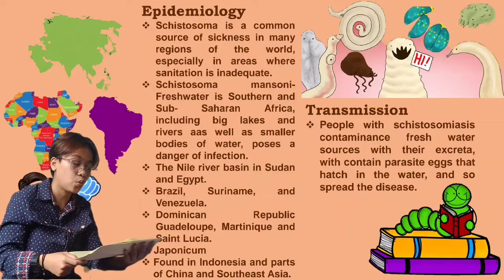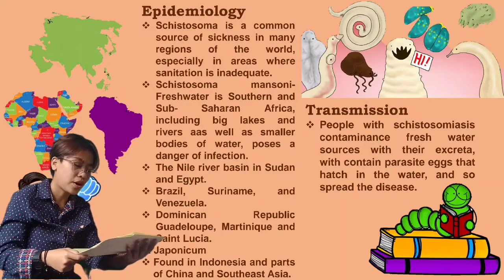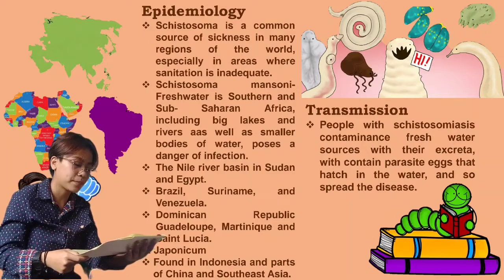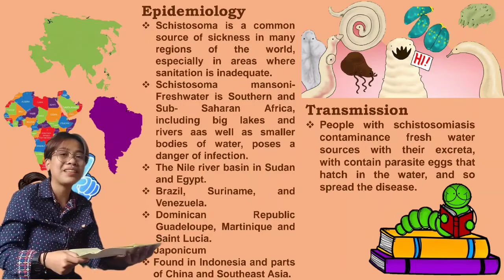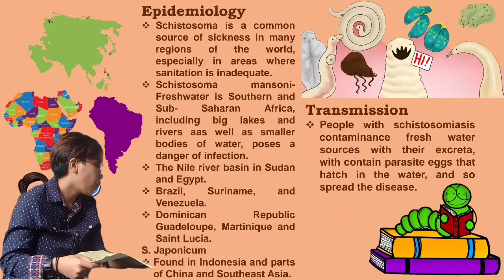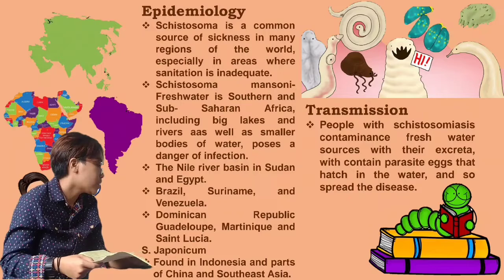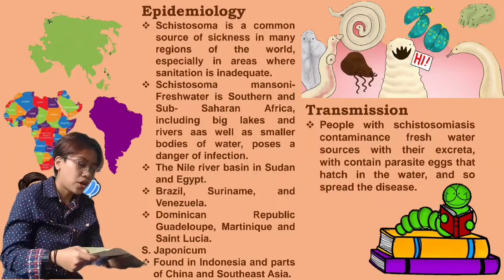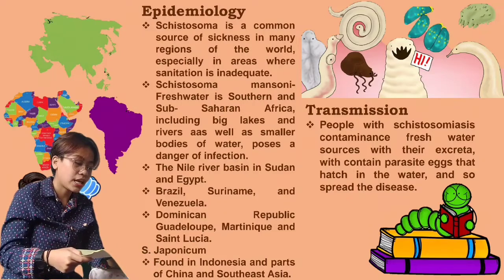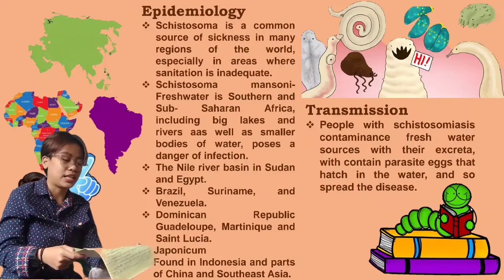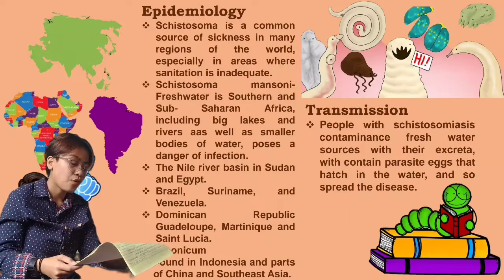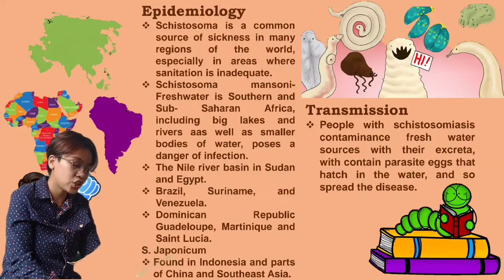Dominican Republic, Guadeloupe, Martinique, and St. Lucia present extremely low risk. For Schistosoma japonicum, it is found in Indonesia and parts of China and Southeast Asia.